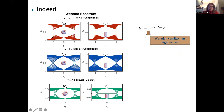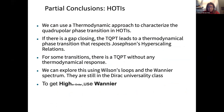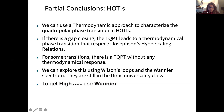Partial conclusions for the first part on higher order topological insulators: we can use a thermodynamic approach to characterize the quadrupolar-to-trivial phase transition when there is a gap closing, and this respects the Josephson hyperscaling relations. For transitions without thermodynamic response, we must use Wilson loops and the Wannier spectrum, which also shows they belong to the Dirac universality class. The main message: to get higher order, use Wannier.